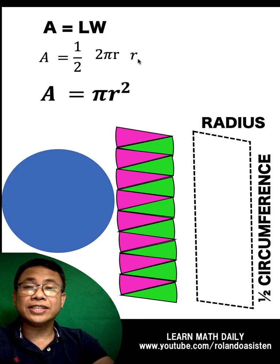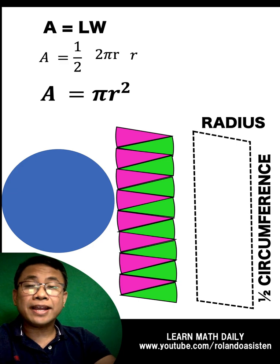And simplifying, the final result is area equals πR squared, which is the popular formula we know about the area of a circle. This is just one of the many ways on how to derive the formula for the area of a circle.